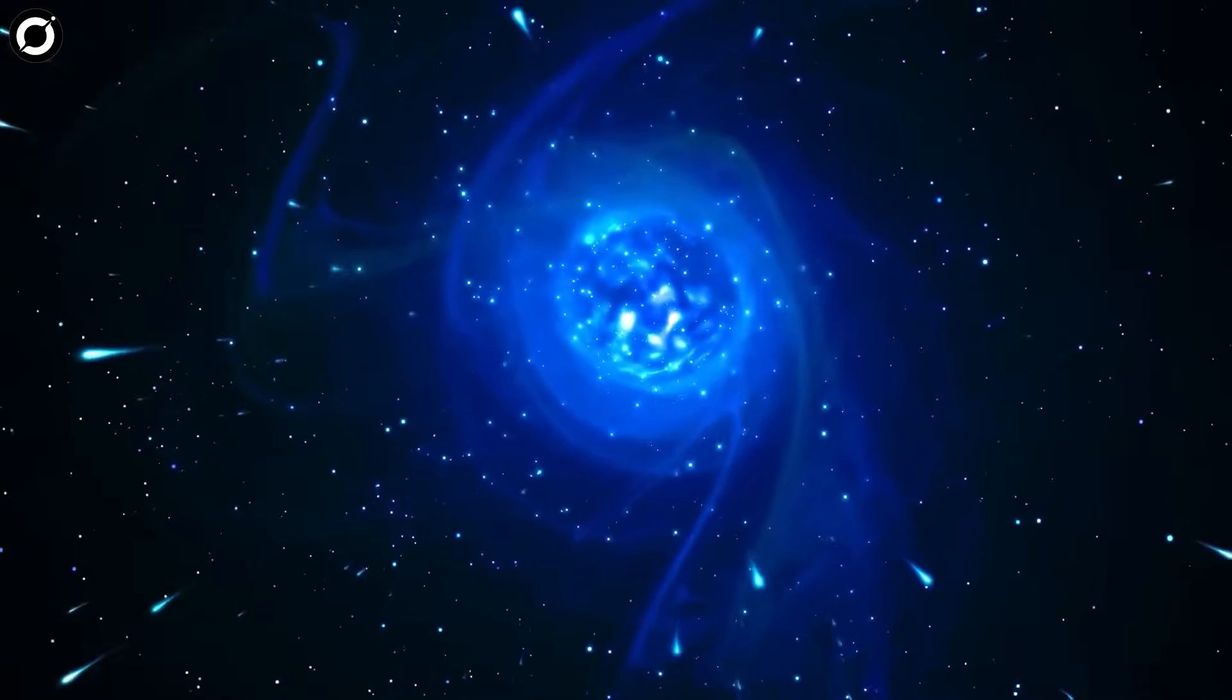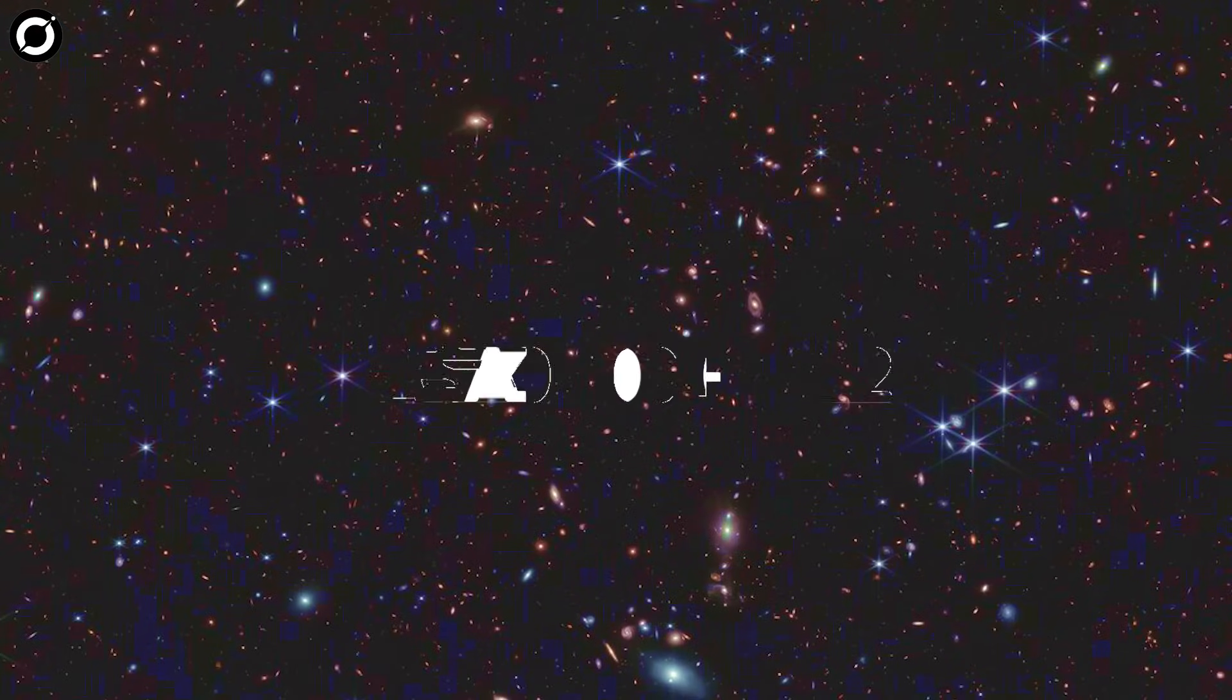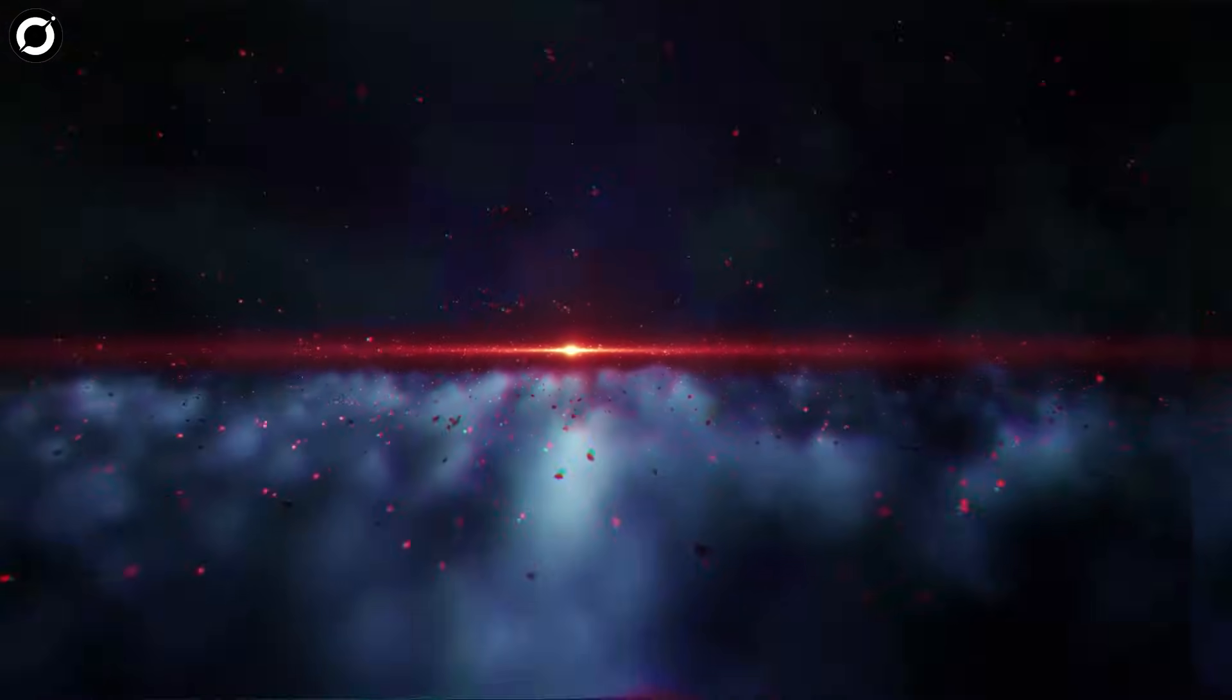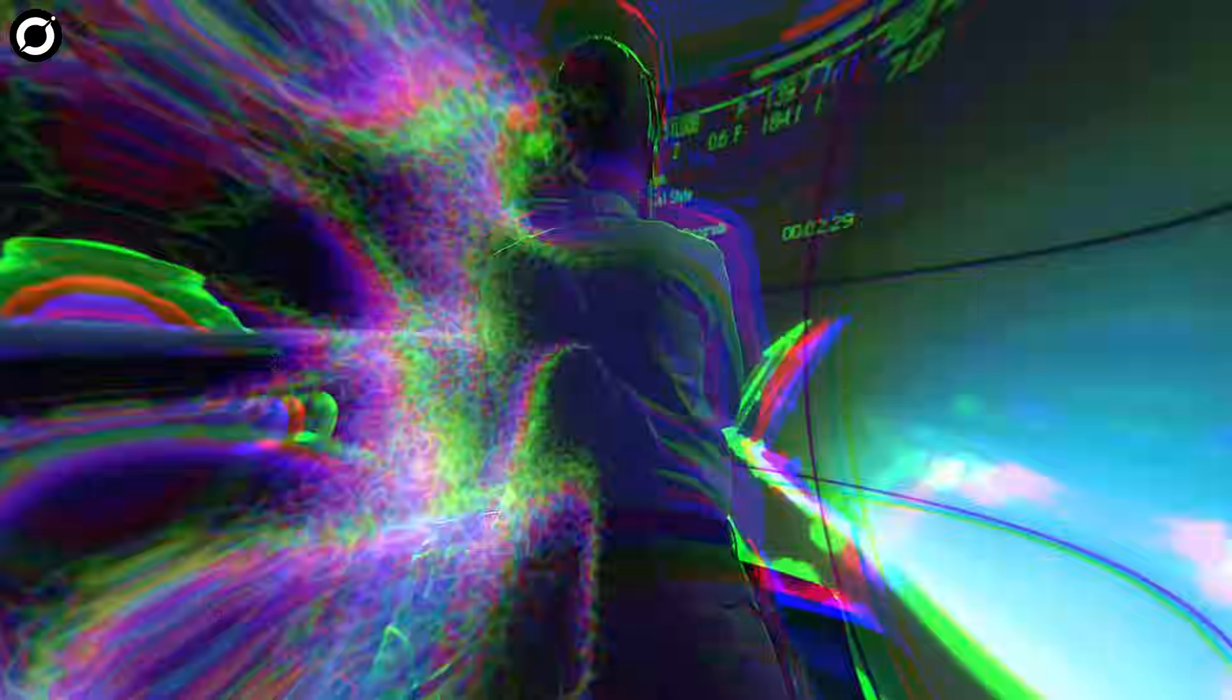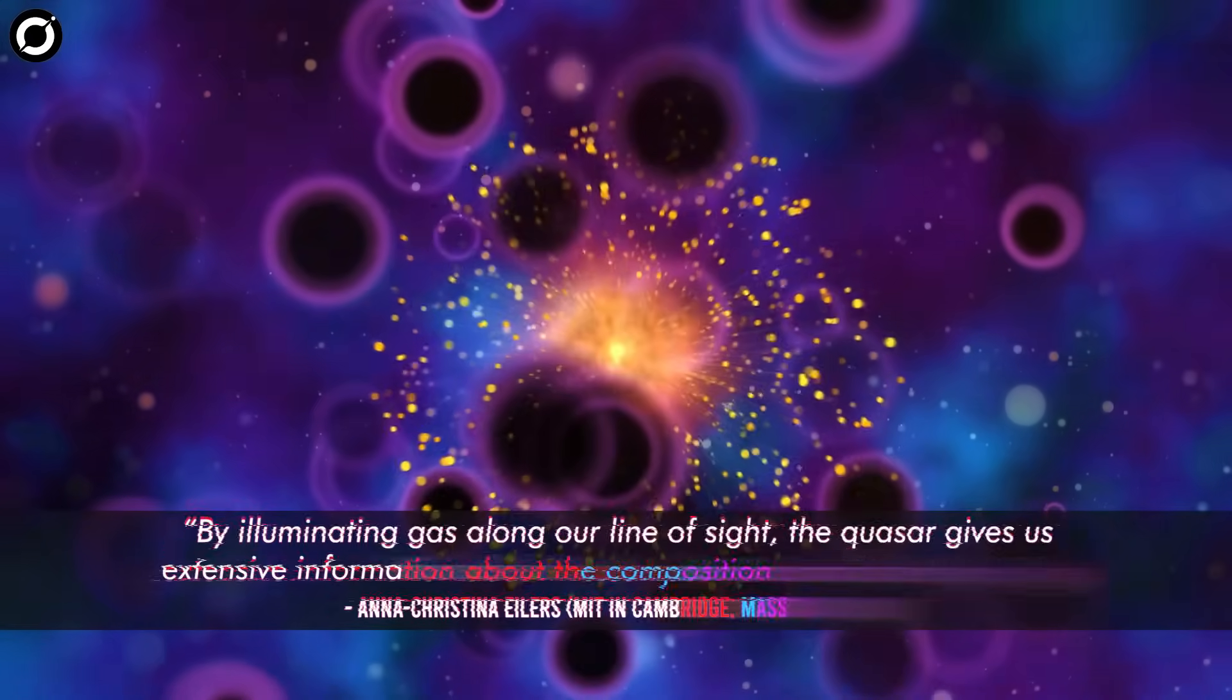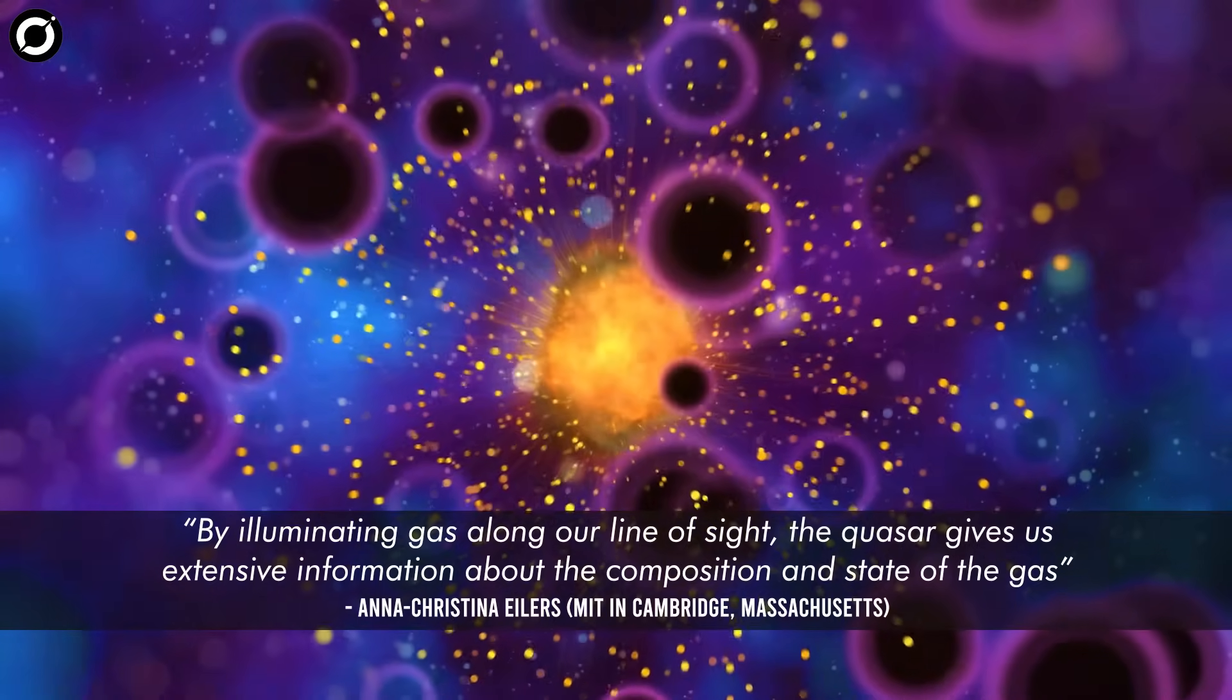Webb measured that galaxies were generally surrounded by transparent regions about 2 million light years in radius. For this observation, the light source is a luminous quasar, which are bright galactic cores that are considered to be fueled by supermassive black holes. The scientists concentrated on 59 galaxies using the light of this quasar. Its huge flashlight illuminated the gas between the quasar and the telescopes. The light moved toward us through various regions of cosmic gas, including opaque or transparent gas. Along the way, by illuminating gas along our line of sight, the quasar gives us extensive information about the composition and state of the gas.